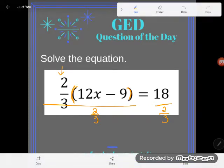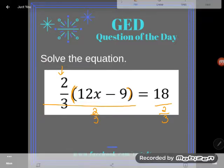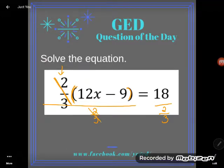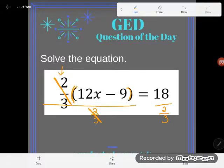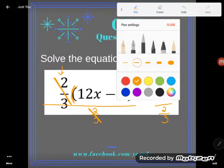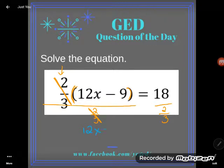So I'm going to divide both sides here by two thirds because I'm allowed to do whatever I want as long as I do it to both sides. Let's see what happens. On this side, multiplying and dividing by two thirds are opposites. They would cancel and all I would have left is that grouping of 12x minus 9.